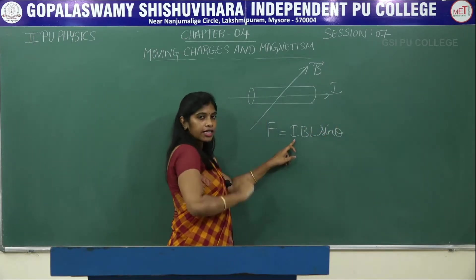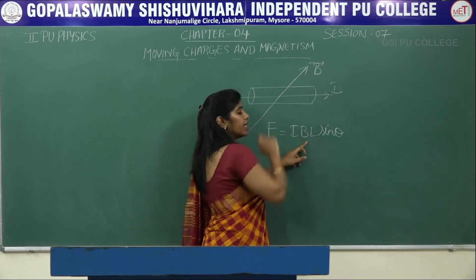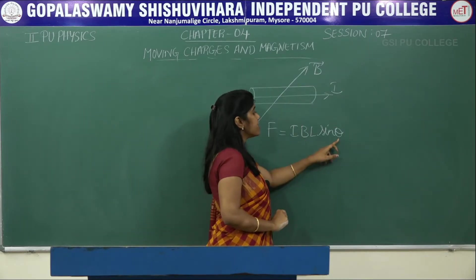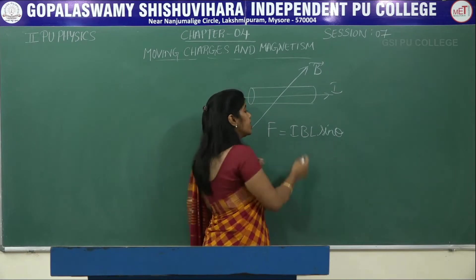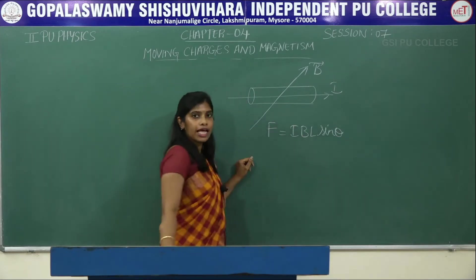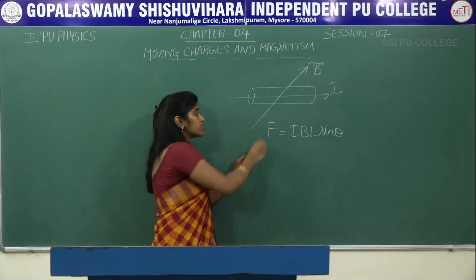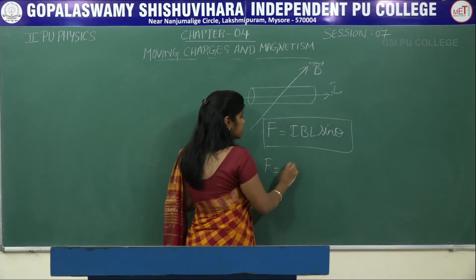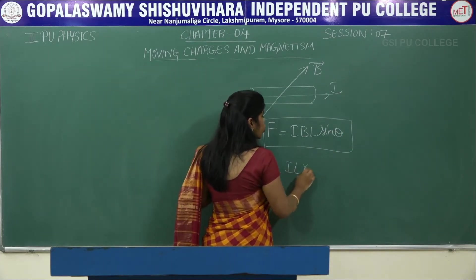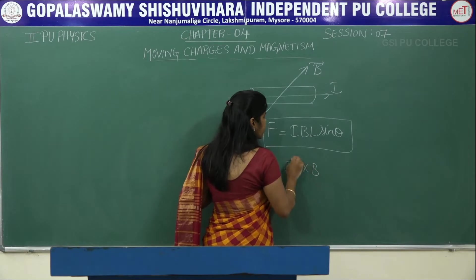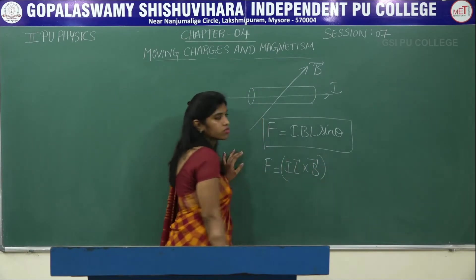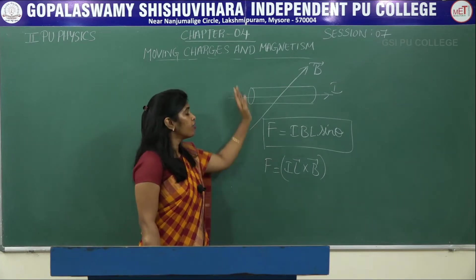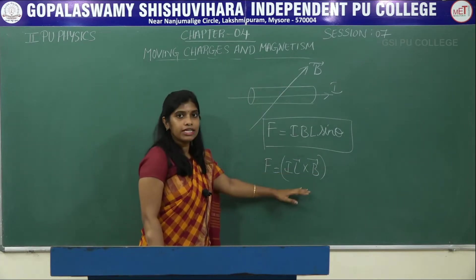Here, I is the current in the conductor, B is the magnetic field applied, L is the length of the conductor, and θ is the angle between the magnetic field and the length element. This force can also be written as F = IL × B. If you don't remember this, go back to session 2 where we have already discussed it.